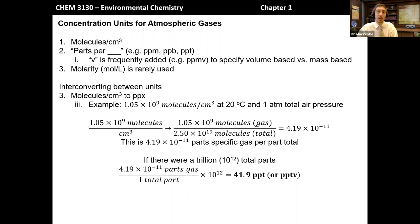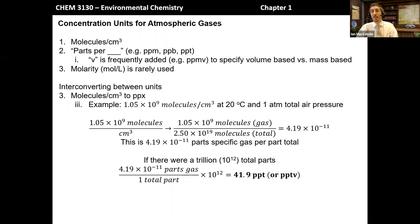So when converting from molecules per cubic centimeter to parts per something, go through this process and then look at the exponent at the end — it will presumably be some negative exponent. Scale by a number that eliminates that exponent: if it's 10 to the minus 6, put it on the parts per million scale by multiplying by 10 to the 6th; if it's 10 to the minus 8 or 9, use the parts per billion scale by multiplying by 10 to the 9th; in this case, 10 to the minus 11, so we multiply by 1 trillion to get parts per trillion. This is how we talk about concentration units and convert between them for atmospheric conditions.